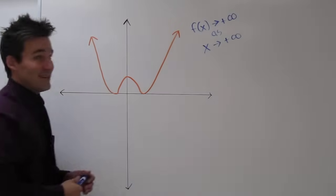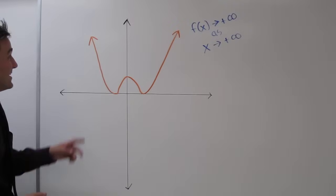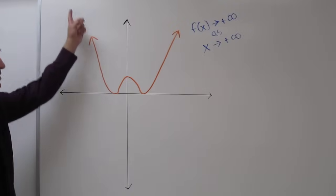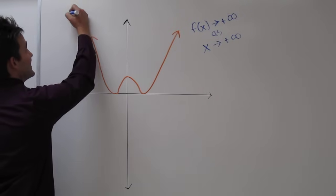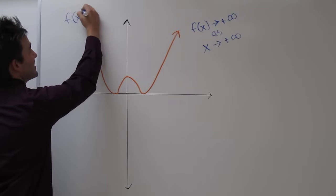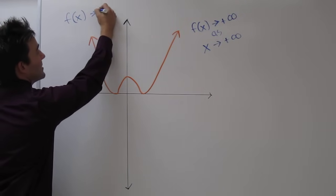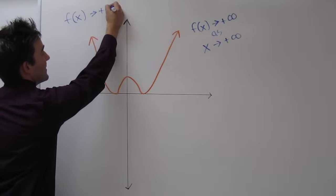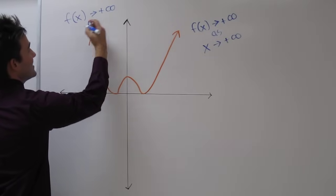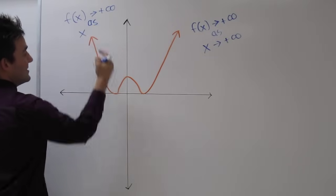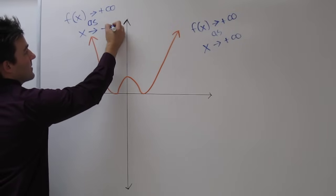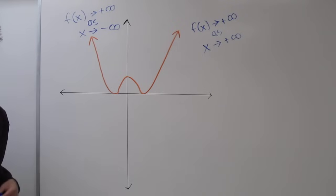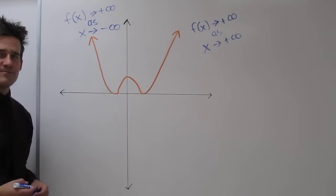What's interesting about this graph is that on the other side, the function is approaching positive infinity as well. So we say again that f of x approaches positive infinity as x approaches negative infinity. That's how we describe end behavior.